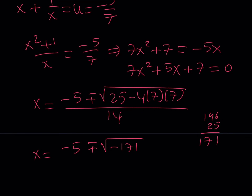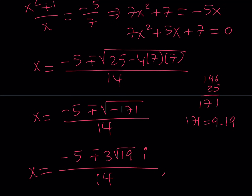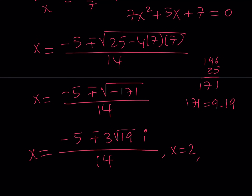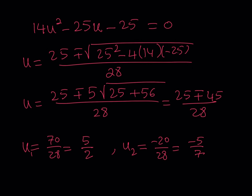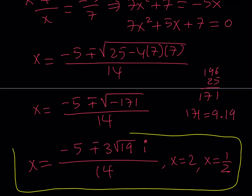Let me simplify: 171 is 9 times 19, so the square root of 171 = 3 times the square root of 19. With the negative under the radical, I get 3i√19. So the complex solutions are x = (negative 5 plus or minus 3i√19) divided by 14. Combined with x equals 2 and x equals 1/2, these are all the valid solutions — real and complex — of this quintic equation.